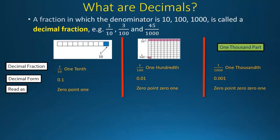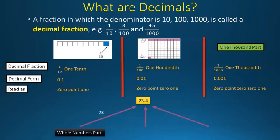Now let's take a random number like 23.4. We have 3 arrows denoting 3 things. The first arrow denotes the whole number part. The second arrow denotes the decimal point. And the third arrow denotes the decimal part, which is 4.